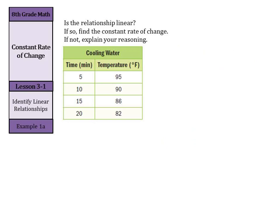Well, let's look at our temperatures first. They go from 95 here to 90, so I'm decreasing by 5. From 90 to 86, I'm decreasing by 4. And from 86 to 82, I'm decreasing by 4. Well, that doesn't look too constant. Let's look at our time. From 5 to 10, I'm increasing by 5. From 10 to 15, I'm increasing by 5. And from 15 to 20, I'm also increasing by 5.